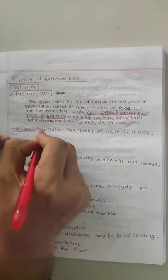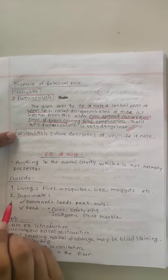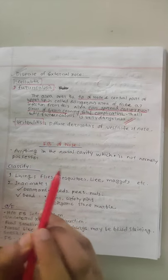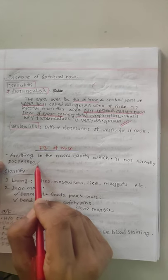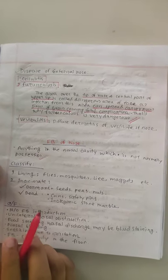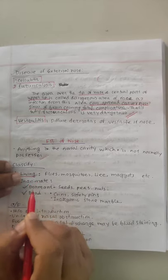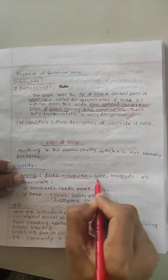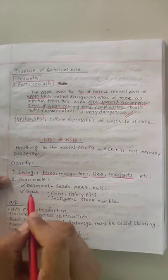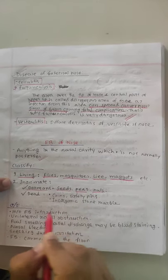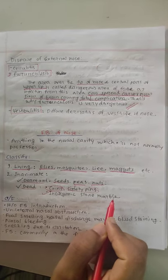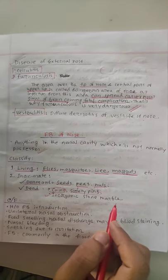The next part is vestibulitis. Vestibulitis is diffuse dermatitis of the vestibule of the nose. Our next question is the foreign body of the nose. The foreign body of the nose is anything in the nasal cavity which is not normally present. Normally in the nasal cavity, the presence of something that doesn't belong is a foreign body. The classification includes living foreign bodies like flies, mosquitoes, lice, and maggots. Inanimate dormant ones include seeds, peas, and nuts. Dead objects include coins, safety pins, and inorganic stone marbles. These are the foreign bodies that may present into the nose.